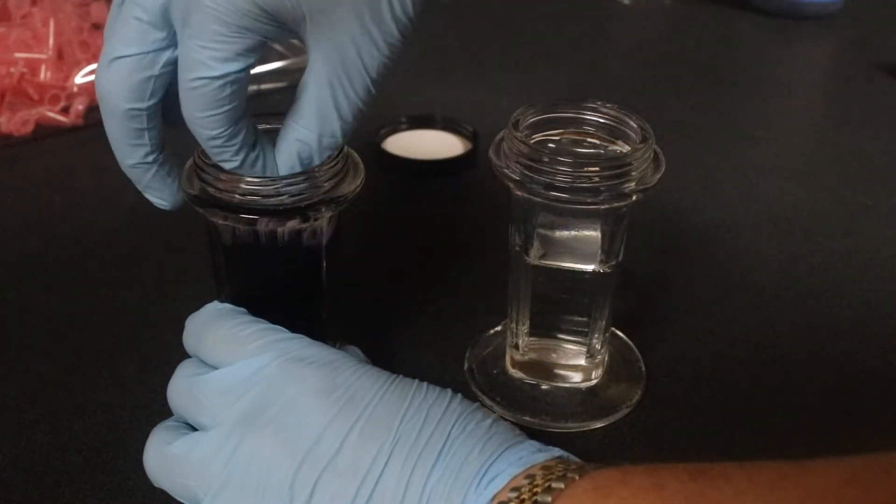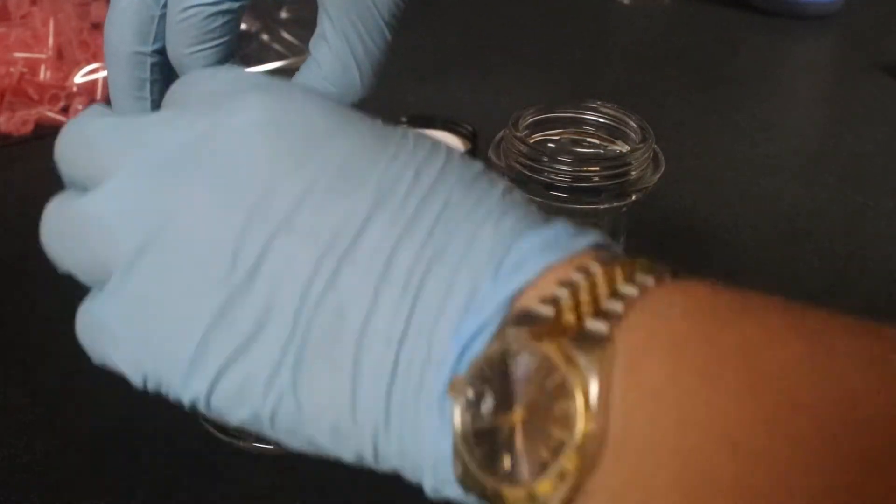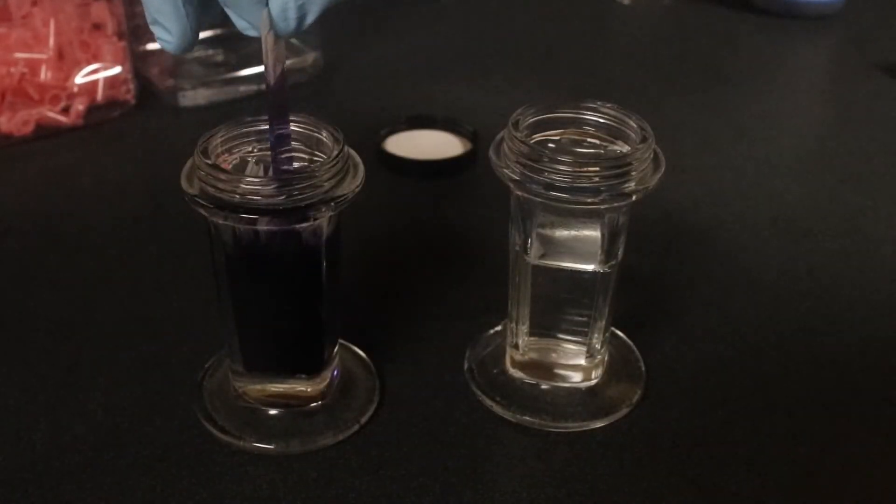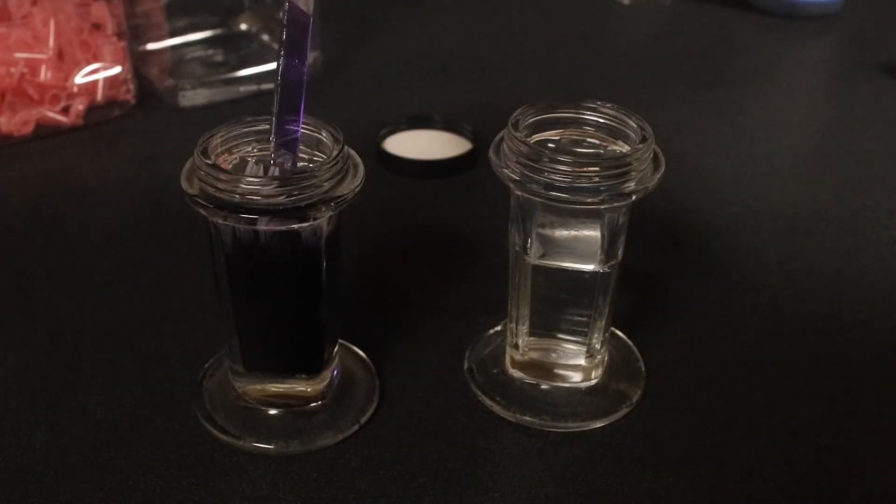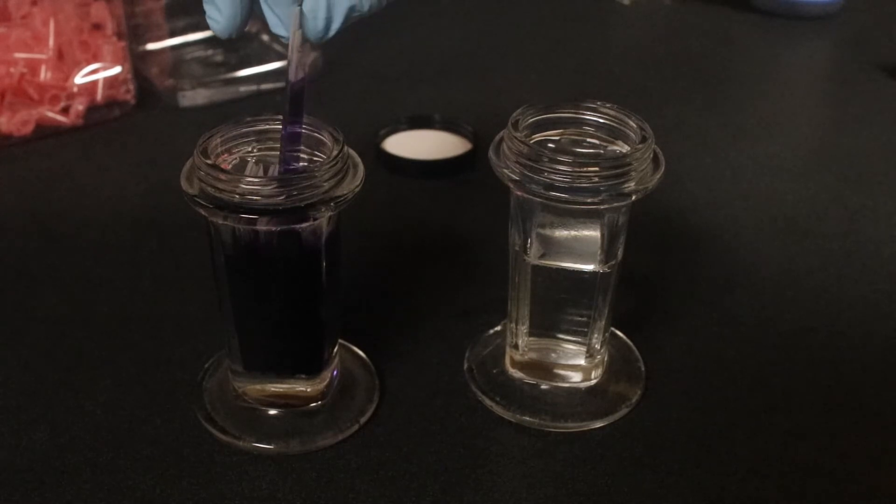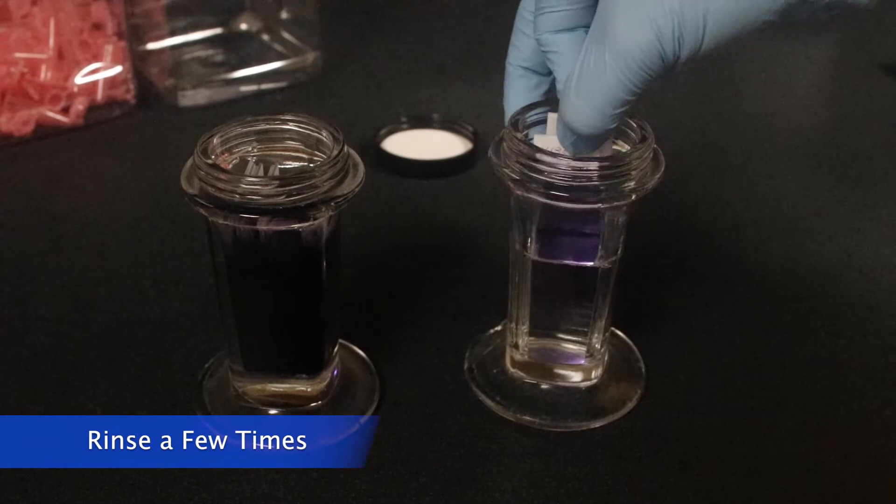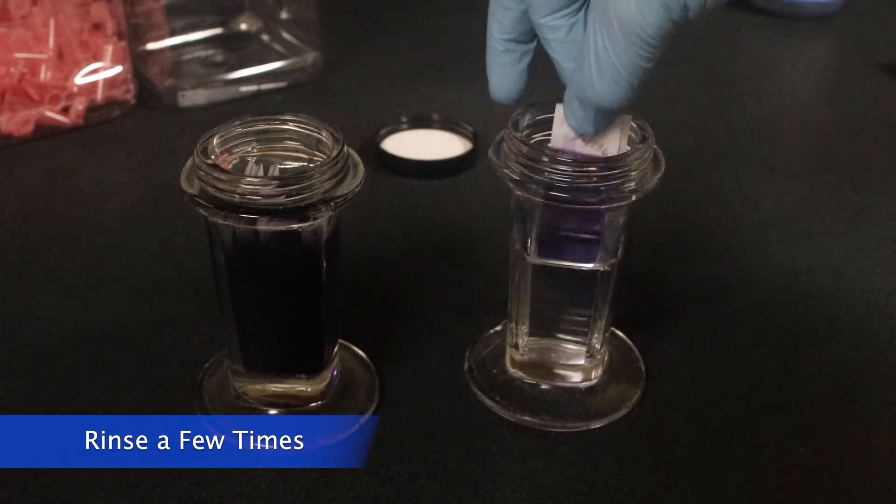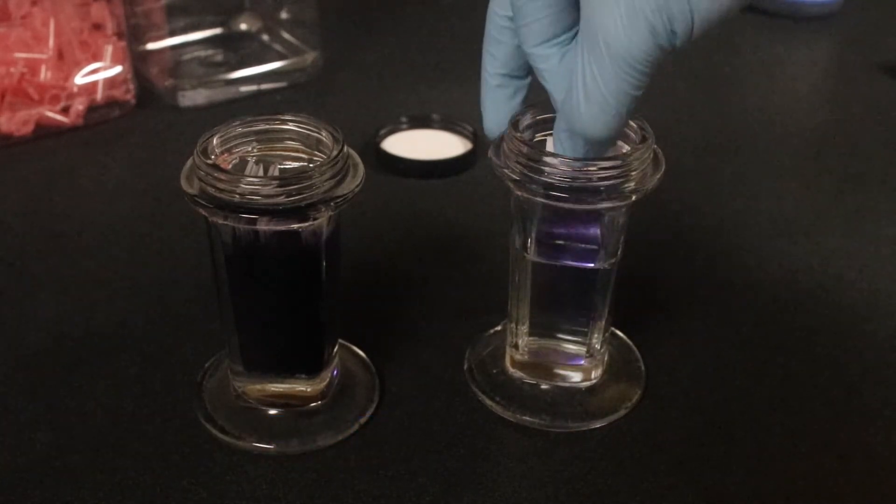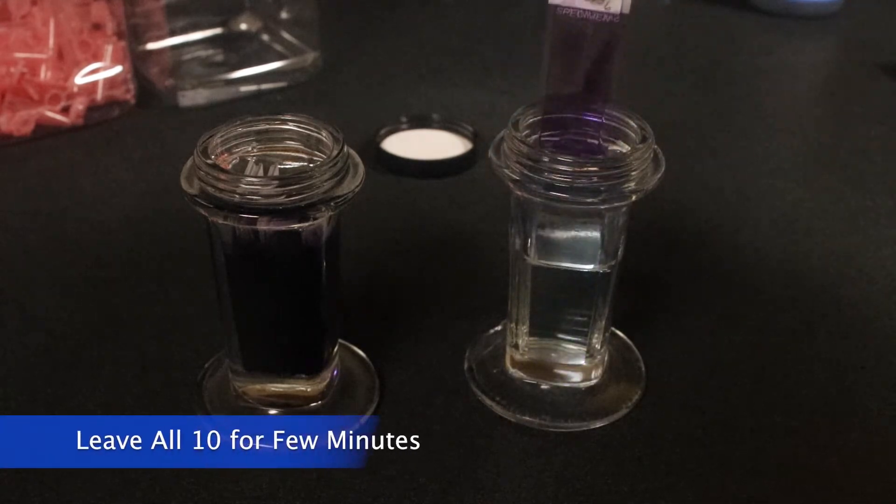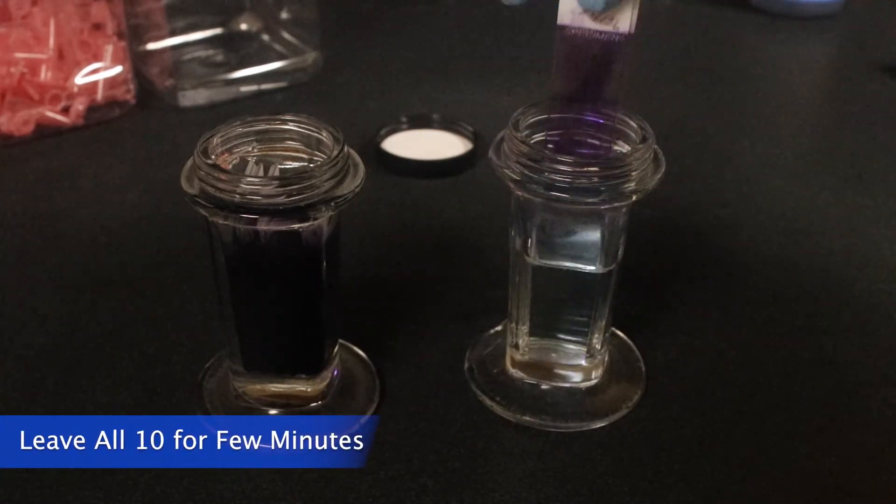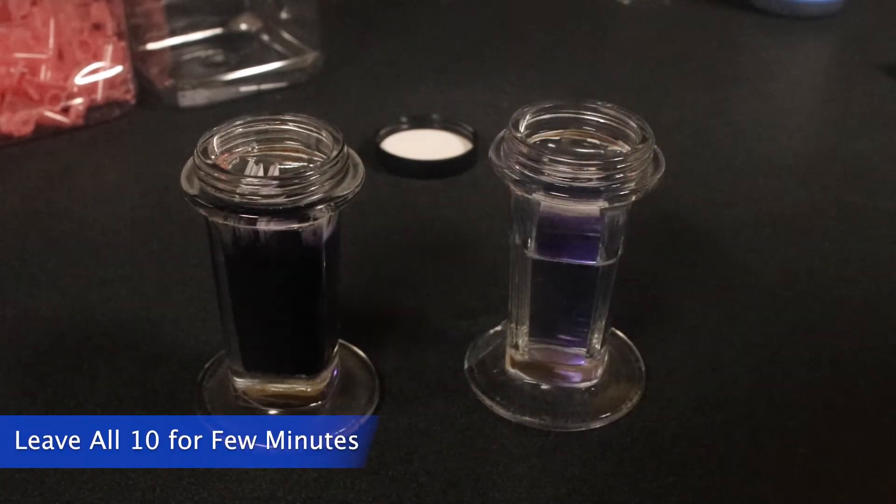So, we're going to put Evian buffer into a new Coplin jar, and from there, we're going to take out the slides from the stain and dip them into the buffer a few times to get some of that excess stain off of it. And we'll leave them in this Coplin jar for a few more minutes before it's time for a final rinse and to let them dry.